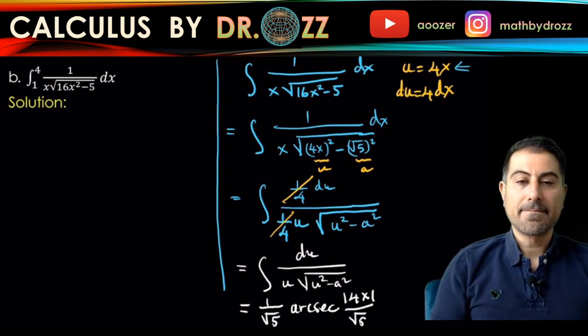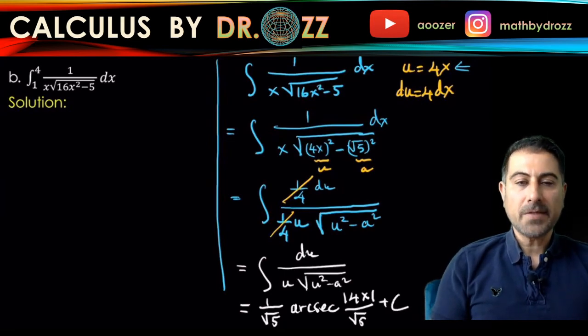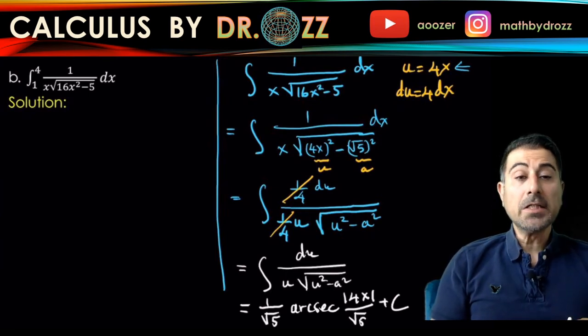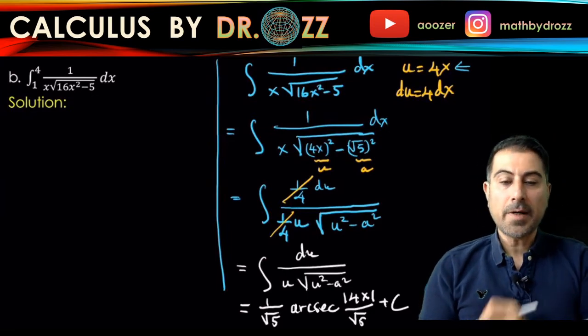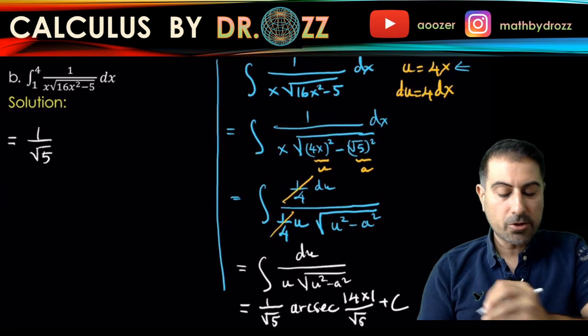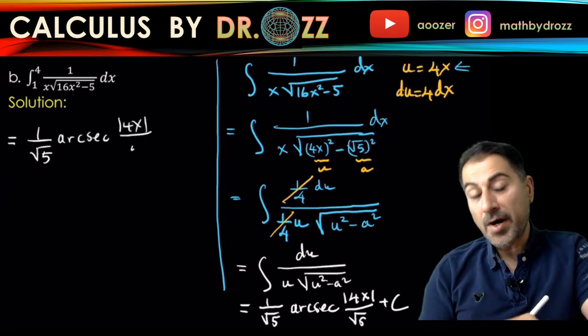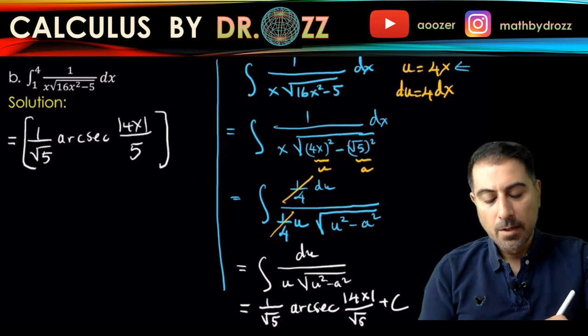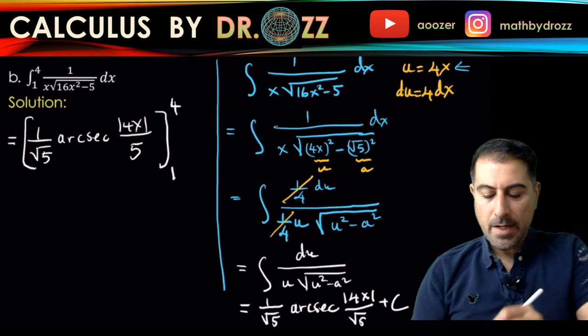Plus C. Okay, so that means we're done with the indefinite integration. So what we should do is copy the final conclusion here without C back to here so that we can use the fundamental theorem of calculus. Okay, so I'm going to copy everything down here and I'm going to use my brackets and place the lower and upper limits of the integral.